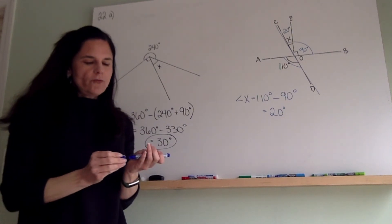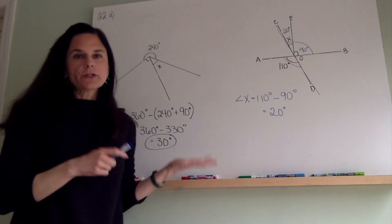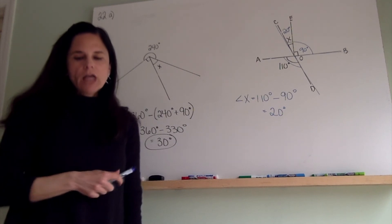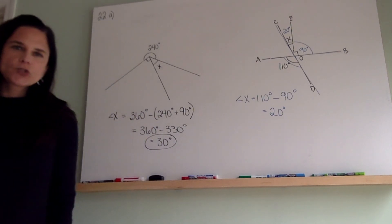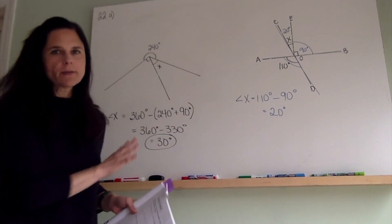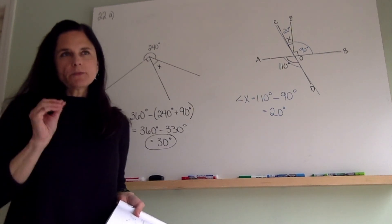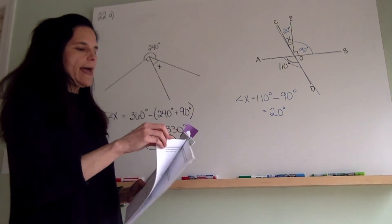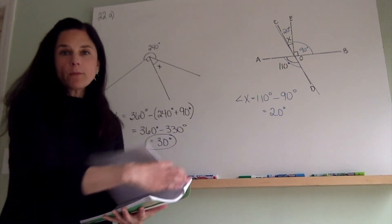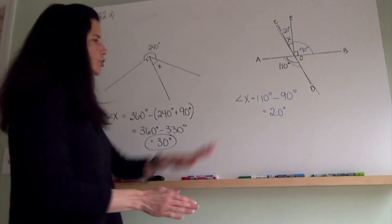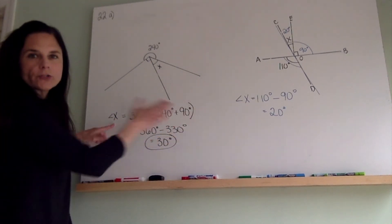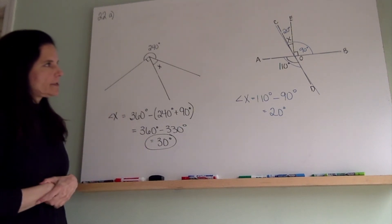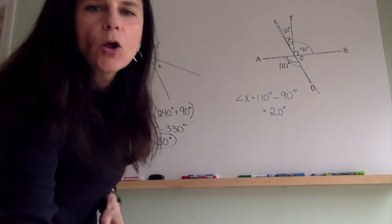Those are some review problems for angle properties. As I said earlier, we need to work through these since it's been quite a few months before we move on to unknown triangle angles. For homework, I have scanned into Renweb a practice sheet where you're doing problems very similar to this — reviewing angle properties and using them to find unknown angles. It's two pages, six problems. Please make sure you show your work, working from top to bottom, left to right, so I can follow your work and see how you arrived at the answer. That's your homework for tonight and we will meet again.